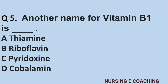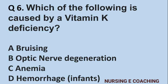Question number 5: Another name for Vitamin B1 is: A) Thiamine, B) Riboflavin, C) Pyridoxin, D) Cobalamin. Answer is A) Thiamine.